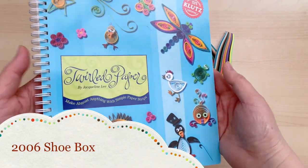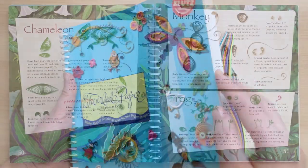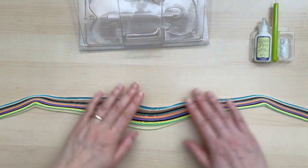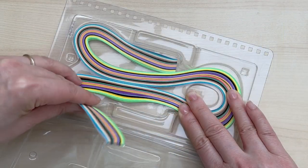I started quilling in 2006. My first quilling paper came from the book Twirled Paper by Klutz. Each time I finished quilling, I'd carefully gather the strips and place it back into the packaging.